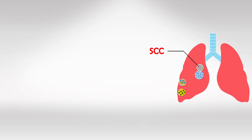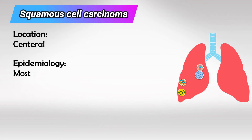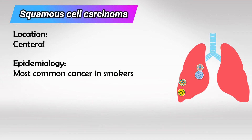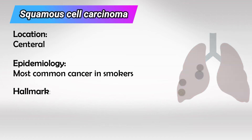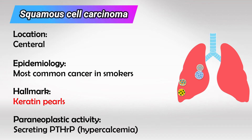Starting with squamous cell carcinoma, which arises in the center, and it's the most common cancer in smokers. Under the microscope, they closely resemble skin cells with desmosomes and keratin — these features are highly characteristic of squamous cell carcinoma. They also secrete parathyroid hormone-related peptides, which is basically a slightly modified parathyroid hormone, so they cause hypercalcemia. In total, there are only two lung conditions that cause hypercalcemia: squamous cell carcinoma and sarcoidosis.